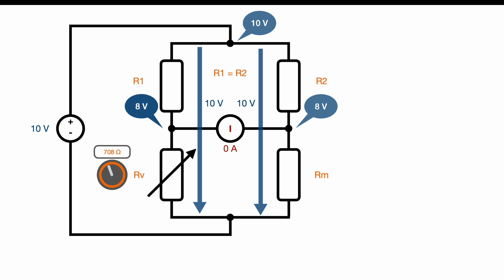Since R1 equals R2, this means RV equals RM. Since RV is 708 ohm, RM is also 708 ohm. So just by manipulating RV to aim for 0 amps in the amp meter, we just figured out how big is RM. In this case, 708 ohm.